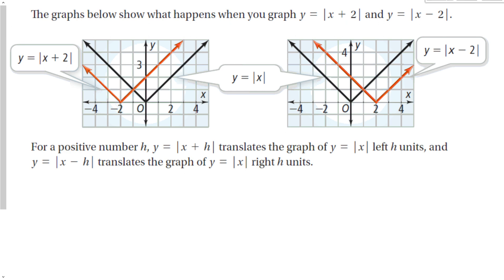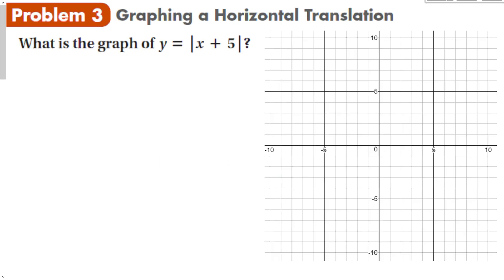The graphs below show what happens when you graph y equals the absolute value of x plus 2 and x minus 2. This is a little different: the red function is the graph of the absolute value of x plus 2, and the other is the graph of the absolute value of x minus 2. While adding a number to the outside of the absolute value shifts it up and subtracting shifts it down, that's the opposite of what happens inside the function. For a positive number h, x plus h translates the graph to the left, and x minus h translates the graph to the right.